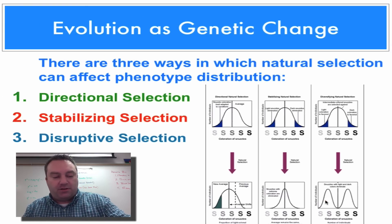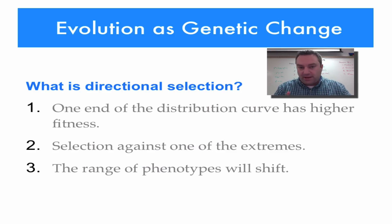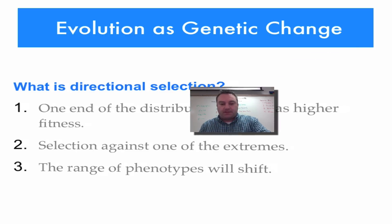Alright, so let's look at these all in a little bit more detail. Directional selection. Once again, one end of the curve, in other words, one of the extremes has a higher fitness. This means the other extreme has selective pressures against it. In other words, it's going to be harder for those individuals to survive and reproduce. Remember your definition of fitness. Now, what happens in directional selection is the curve is going to move in one direction.